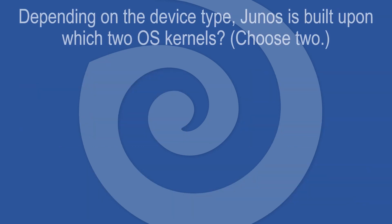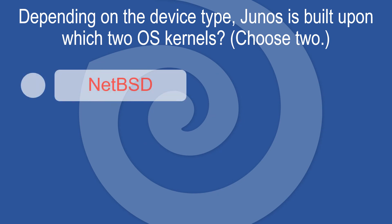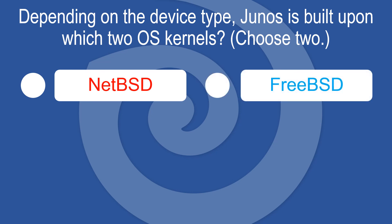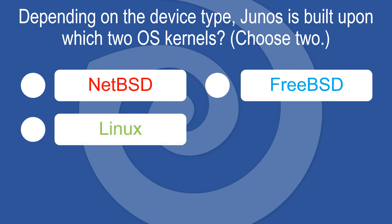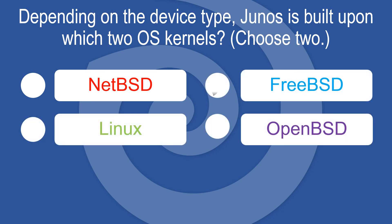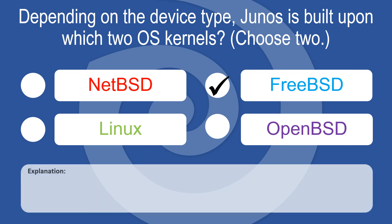Depending on the device type, Junos is built upon which two OS kernels? Choose two: NetBSD, FreeBSD, Linux, OpenBSD. The answer is FreeBSD and Linux.